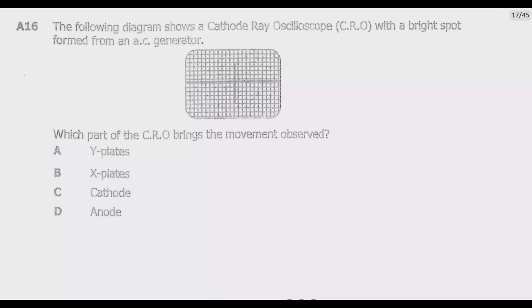The following diagram shows a cathode ray oscilloscope with a bright spot formed from an AC generator. Which part of the cathode ray oscilloscope brings about the movement observed? The options are: A) Y plates, B) X plates, C) cathode, D) anode.